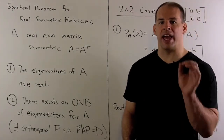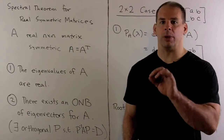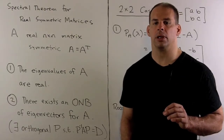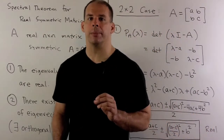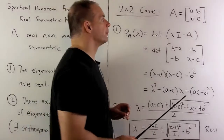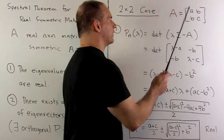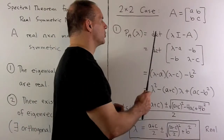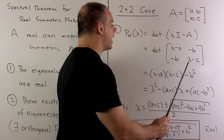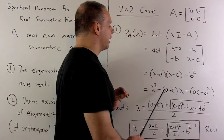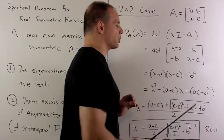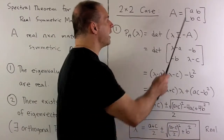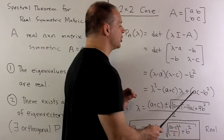So not only is A diagonalizable, meaning we can put it in diagonal form, we can put it in diagonal form using an orthogonal matrix. We're only interested in the 2x2 case here, so we'll let A be any real 2x2 symmetric matrix, with A and C on the diagonal and B off the diagonal. We'll start by finding the characteristic polynomial by forming the determinant of lambda I minus A. That gives us lambda squared minus (A plus C) lambda plus AC minus B squared. The coefficient of lambda is minus the trace of A, and the constant term is the determinant of A.